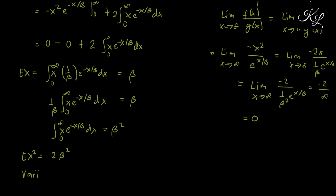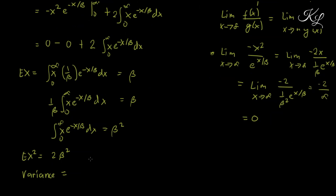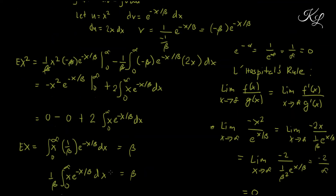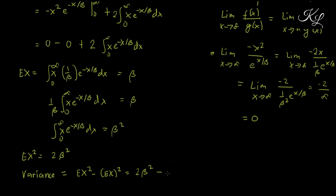Now for our variance. The formula is expectation of x squared minus the square of expectation of x. Expectation of x squared is 2 beta squared, and the square of expectation of x is beta squared. Therefore, variance equals 2 beta squared minus beta squared, which gives us beta squared. That is the variance for the exponential distribution.